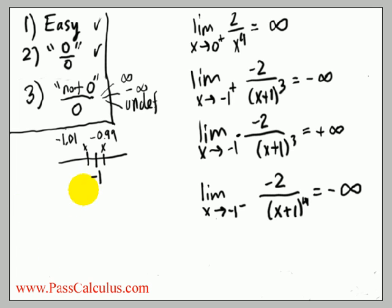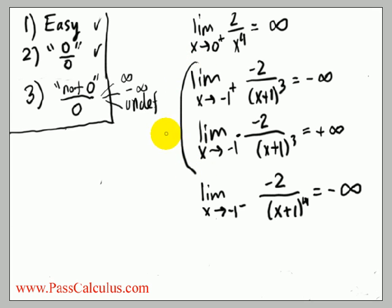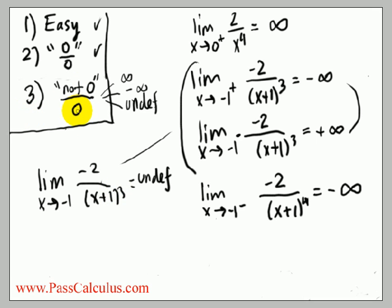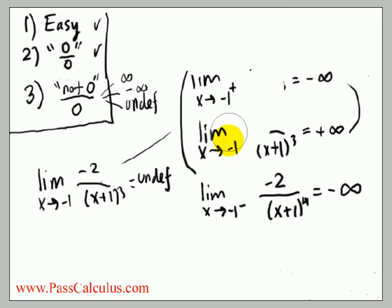You just have to analyze what's going on and work it out. Notice these two examples — if you were asked for the two-sided limit as x goes to negative one, the strategy is to first do the right limit, then the left limit, and then compare. Since these two answers are different, we know the two-sided limit is undefined. So when you're in this third case — not zero over zero — and you're asked for a two-sided limit, the strategy most often is to look at the left and right limits and see if the answers are the same or not.